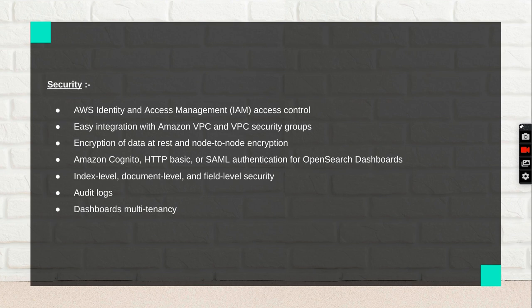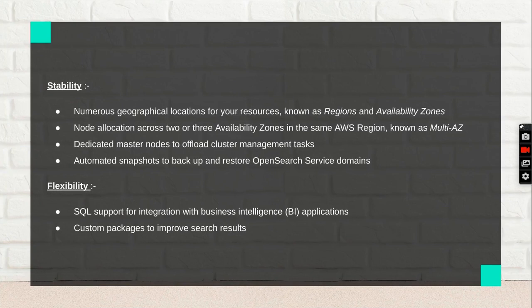Security features include easy integration with Amazon VPC and VPC security groups, and Amazon Cognito, HTTP basic, or SAML authentication for OpenSearch dashboards. For example, if multiple developers need limited access to OpenSearch, you can configure Cognito for them. Other features include index-level, document-level, and field-level security, audit logs, and dashboard multi-tenancy.